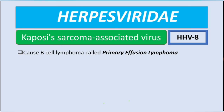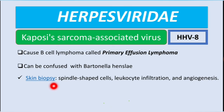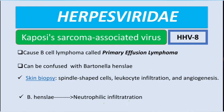The Kaposi sarcoma-associated virus also causes a B-cell lymphoma called primary effusion lymphoma. The lesions caused by this virus can be confused with Bartonella henselae, which is a bacterium we will discuss in bacteriology. On skin biopsy, you see spindle-shaped cells, leukocyte infiltration, and angiogenesis — the physiological development of new blood vessels.